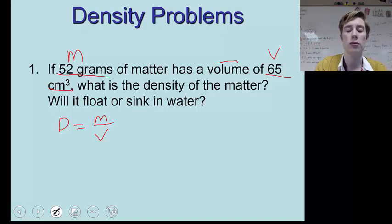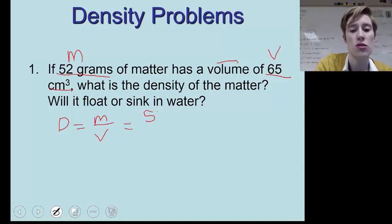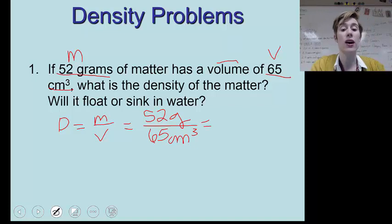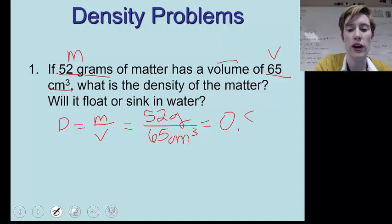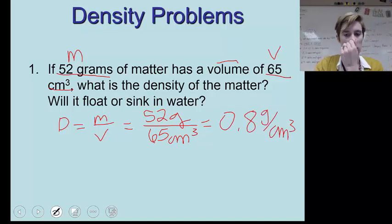Then you write out your formula. So if you want to write out the steps on your paper, you can. The first is label your givens. The second is write out your formula. Then I want you to rearrange our formula to solve for what we're looking for. We're looking for density, so we can leave it as D equals M over V. All I have to do now is plug in my M, 52 grams. Make sure you use your units. And 65 centimeters cubed. And then now all I need to do is plug this into my calculator, and I can get my answer. And my answer is 0.8 grams per centimeters cubed.